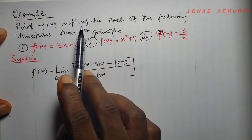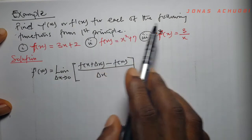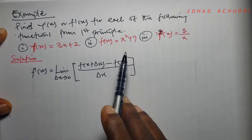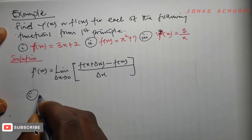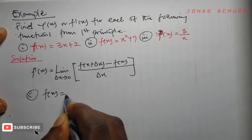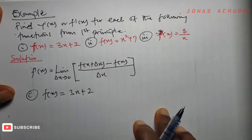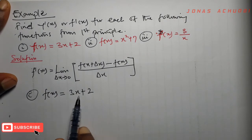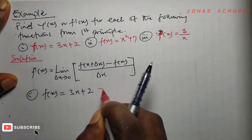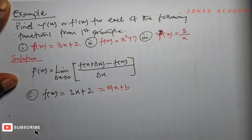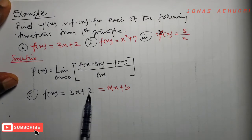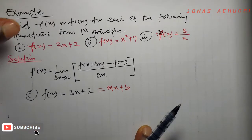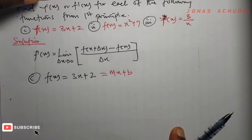Find y prime or f prime of x for each of the following functions from first principle. The first function is f of x equal to 3x plus 2. Now, 3x plus 2 is just a straight line because this equation is already in the form mx plus b, the slope-intercept form. So we can say from here that the slope of this straight line is 3 and that the intercept is 2. We want to verify that the slope is actually 3 by applying first principle.